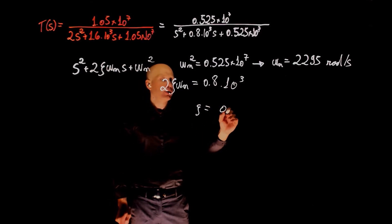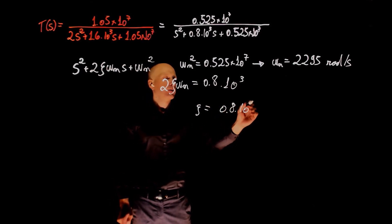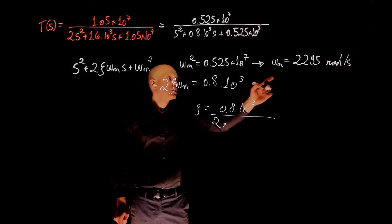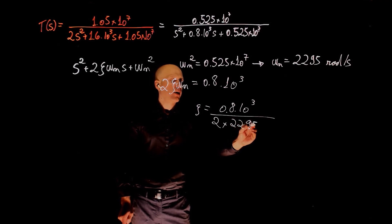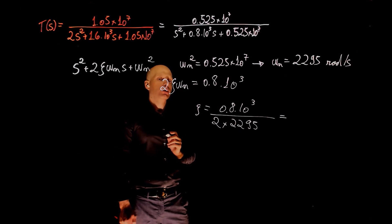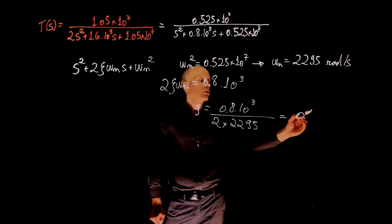Zeta is 0.8 times 10 to the power of 3 divided by 2 times 2295, the value of omega n, and this is equal to 0.17.